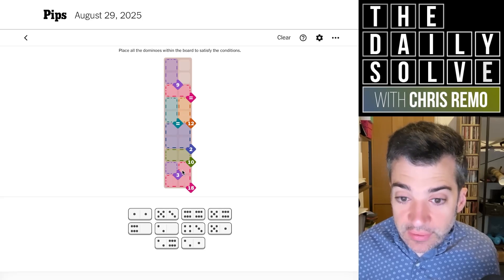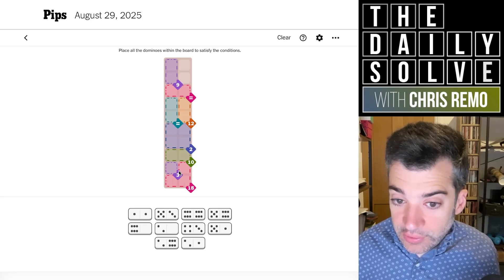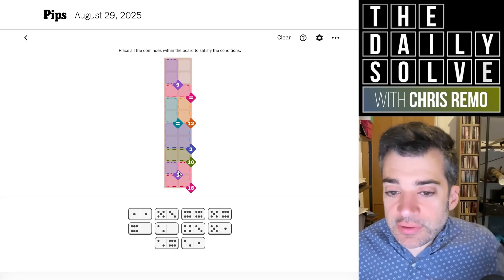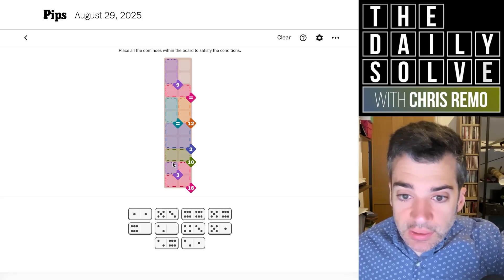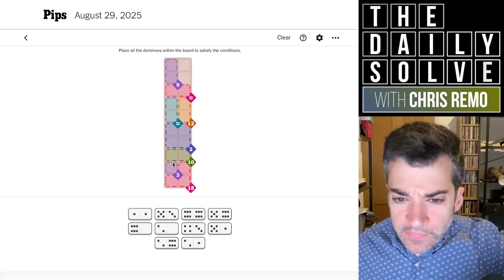And then one of them will be a six-three, presumably in order to—well, I was going to say it needs to be six-three, but I guess actually it could be a six that points up into the 10 and the 10 could point down into the three.